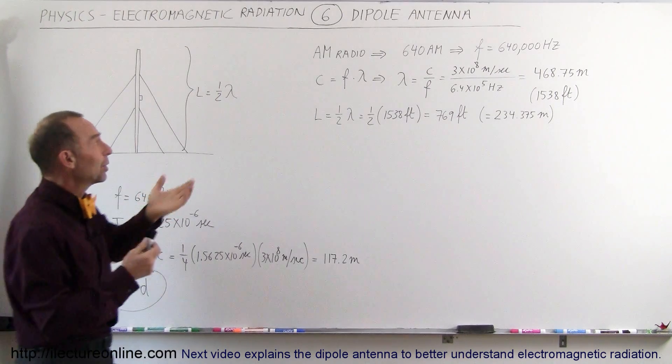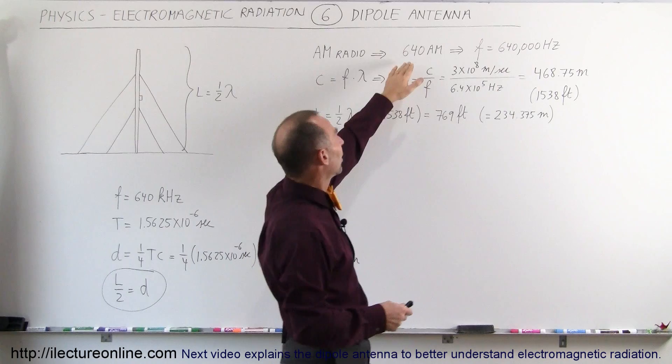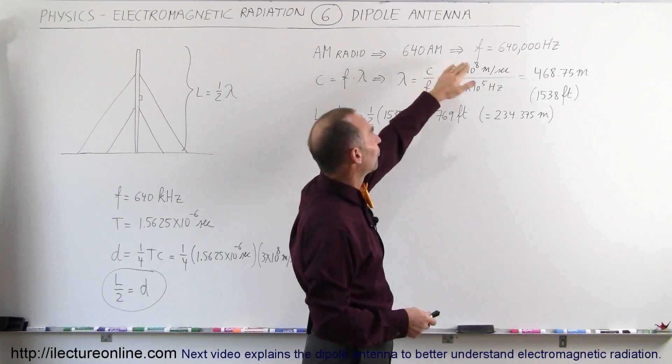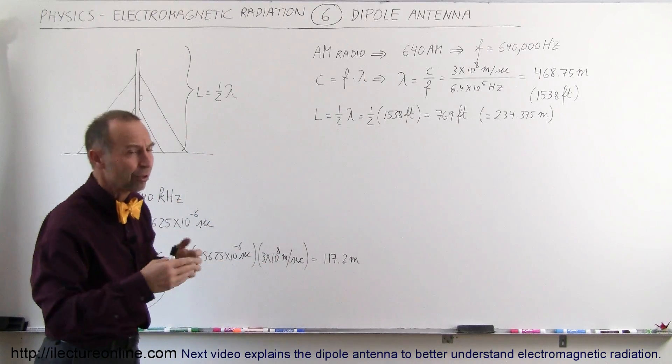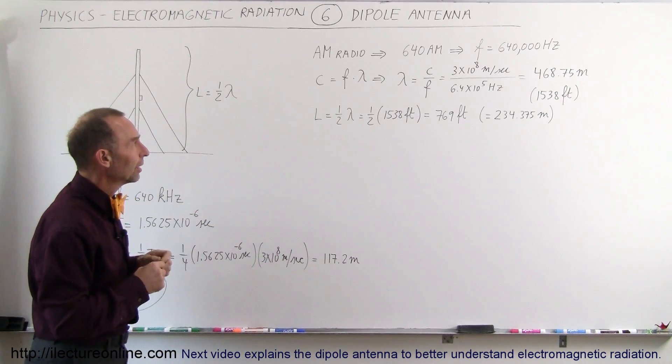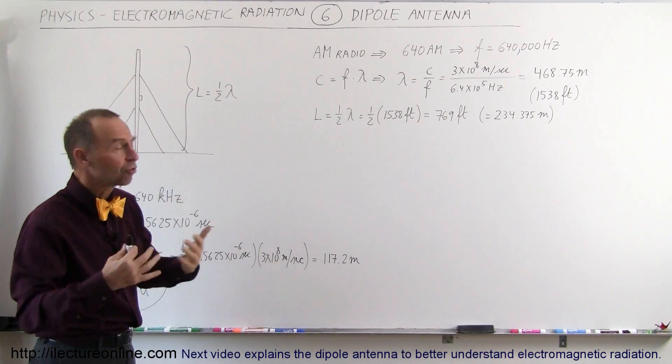Let's take an AM radio station. Let's say that we look at 640 AM. The frequency, therefore, is 640,000 Hz. That's the frequency of the radio broadcast in AM. That's amplitude modulation frequency.